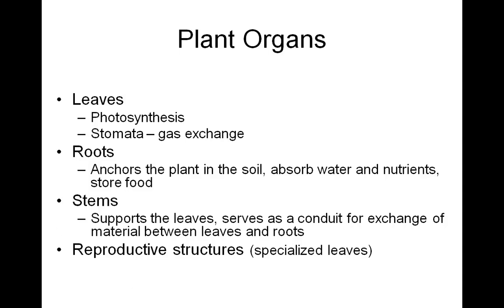The four plant organs are: leaves, which function in photosynthesis. Stomata — stoma would be the singular form — are the pores through which carbon dioxide and oxygen diffuse into and out of the leaf. Roots function in anchoring the plant into the soil, absorbing water and nutrients, and also may be a food or photosynthetic sugar-storing region in the plant.